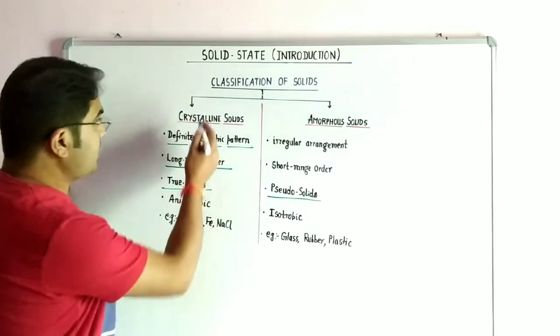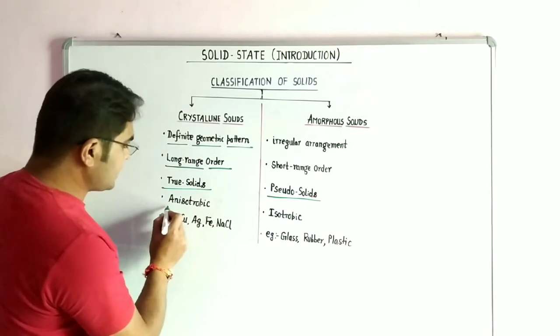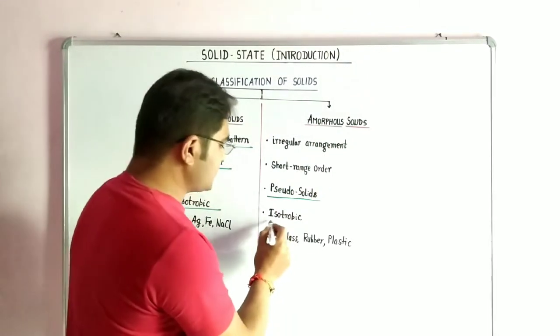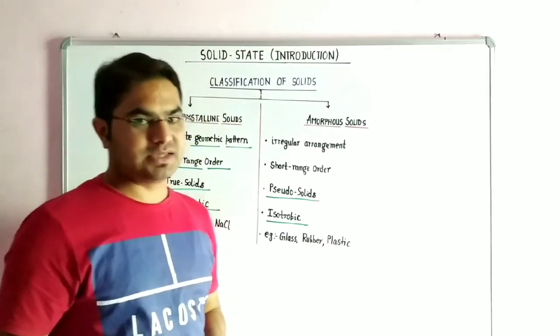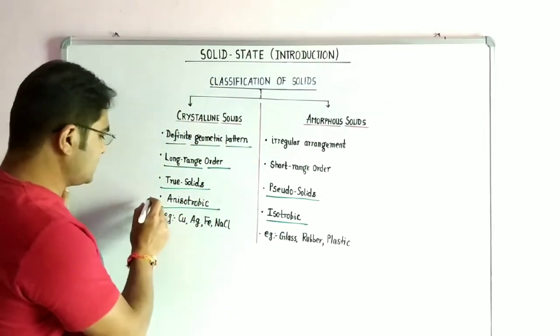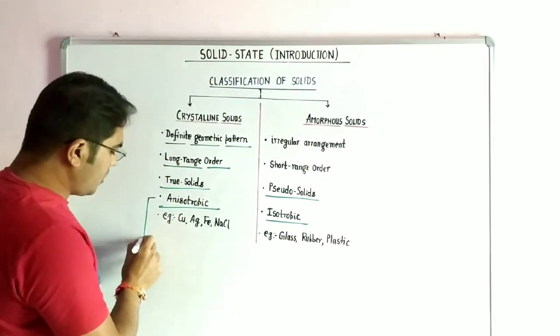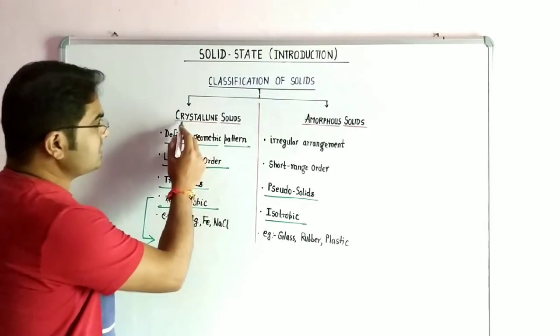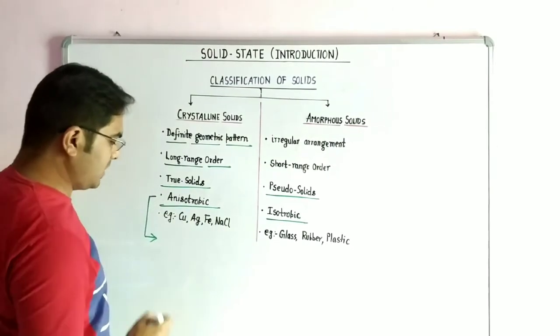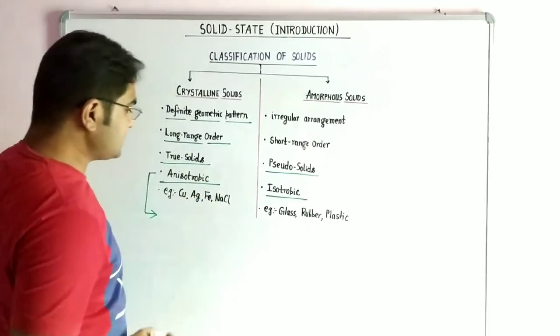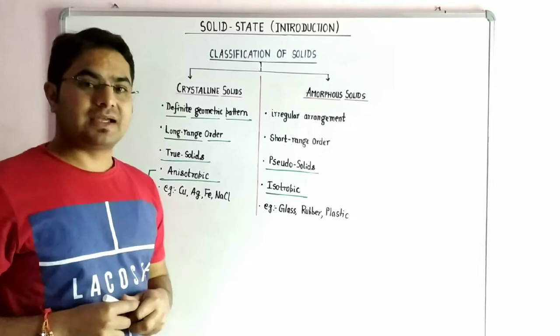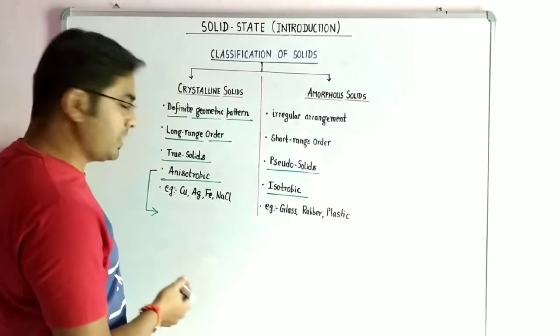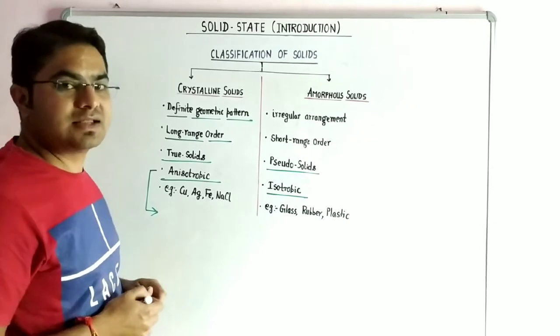Next property is crystalline solids are anisotropic in nature while amorphous solids are isotropic in nature, or we can use the term anisotropy or isotropy. In crystalline solids the anisotropic behavior is that it possesses different physical properties in different directions, like electrical conductance, magnetic property,